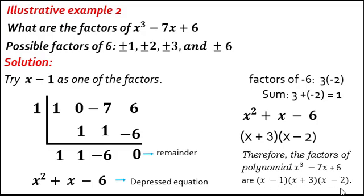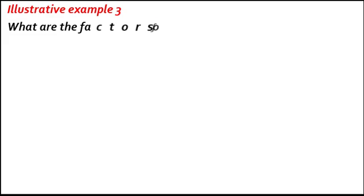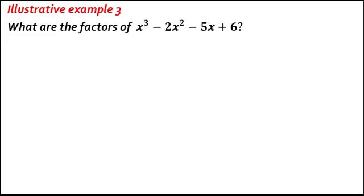When we multiply the factors x minus 1 times x plus 3 times x minus 2, the product is the given polynomial. Illustrative Example 3: What are the factors of x cubed minus 2x squared minus 5x plus 6?